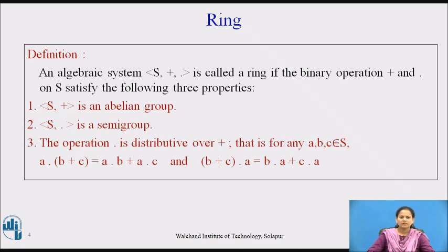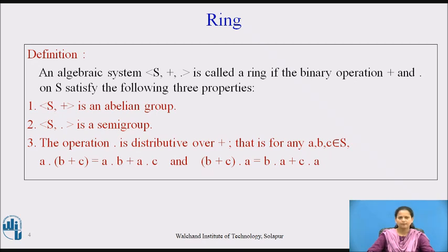To start with, we will see the definition for an algebraic structure termed as a ring. An algebraic system (S, +, ·) is called a ring if the binary operations + and · on S satisfy the following three properties. Number 1: (S, +) is an abelian group. Number 2: (S, ·) is a semigroup. And number 3: the operation · is distributive over +. That is, for any a, b, c belonging to S, we get a·(b+c) = a·b + a·c, and (b+c)·a = b·a + c·a.